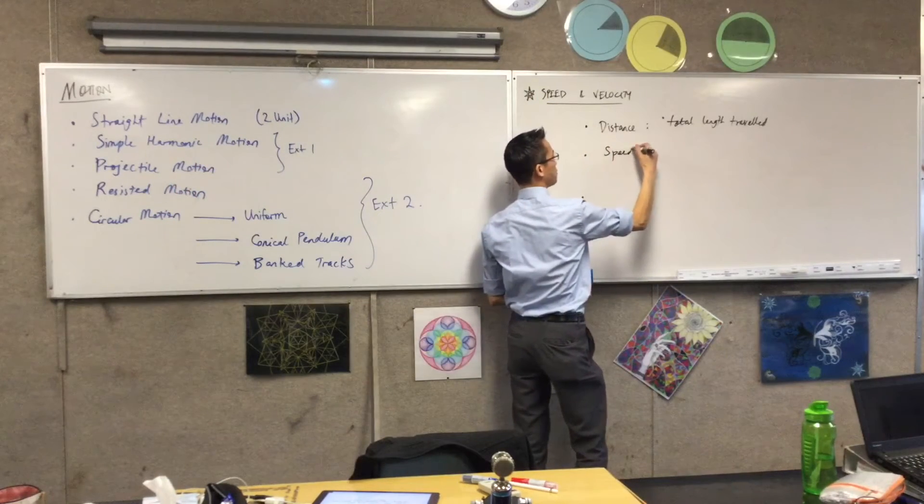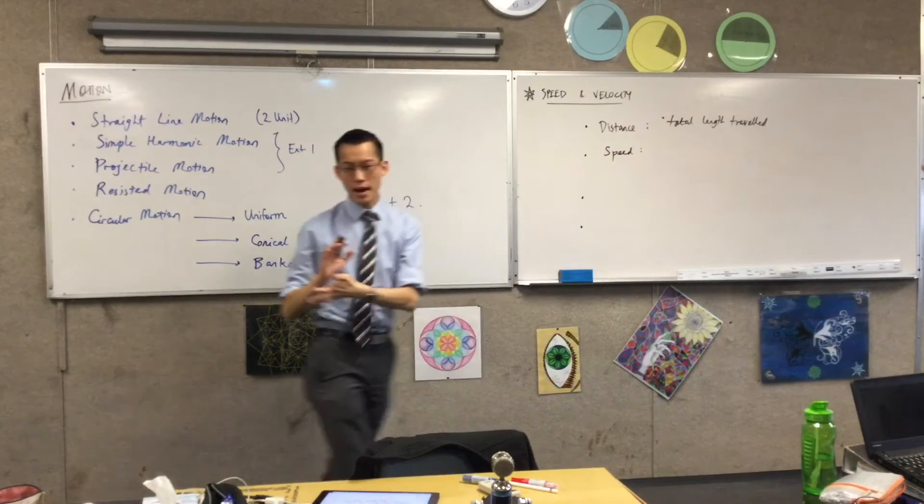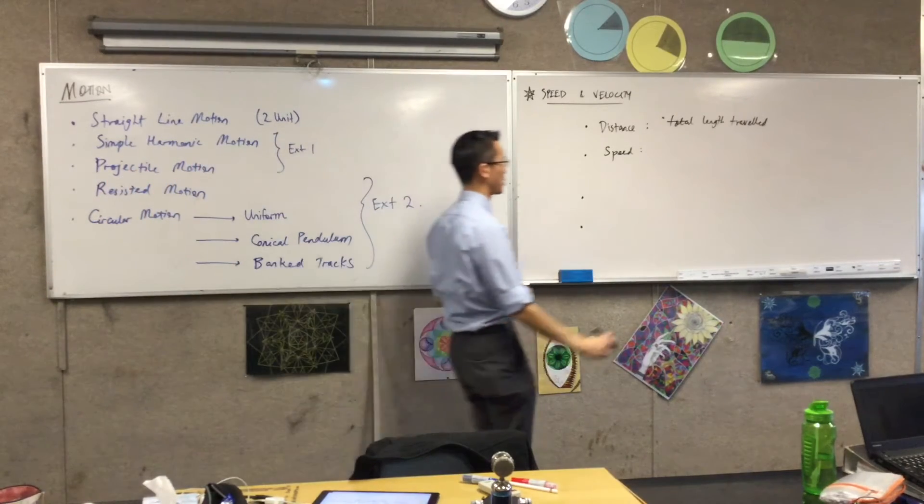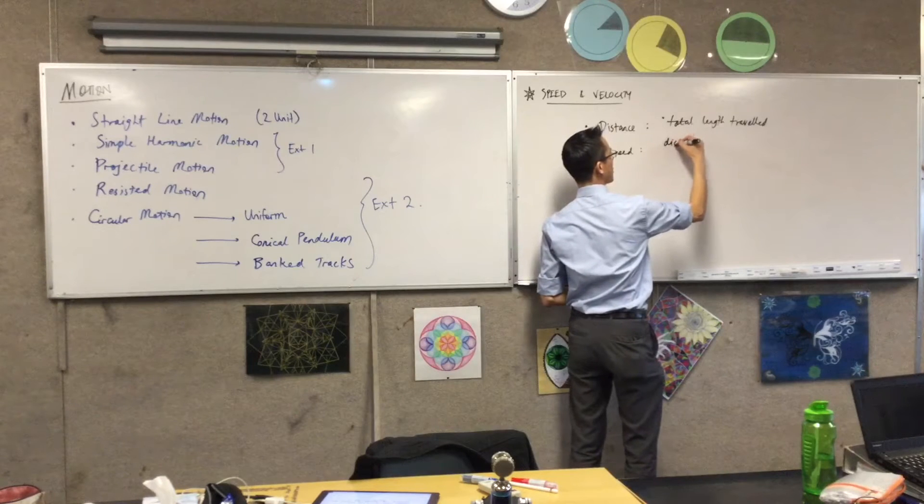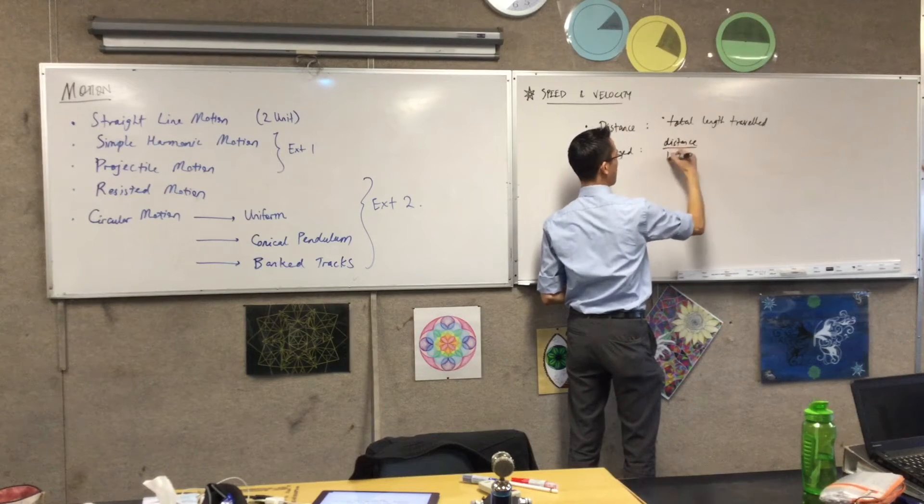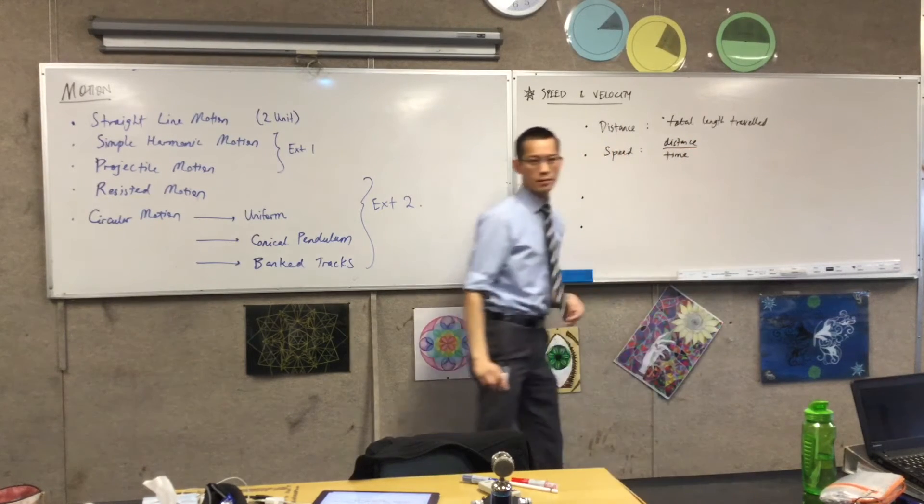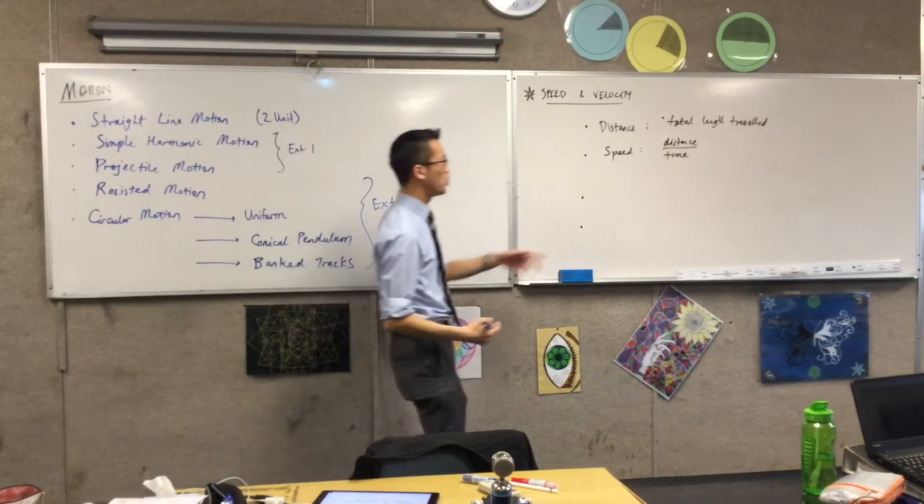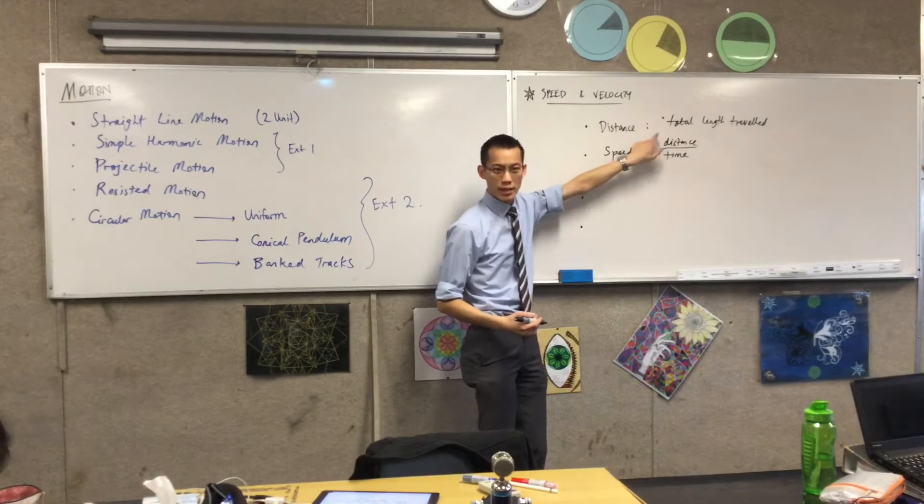So speed is simply, we actually have this triangle which you've learned all the way back in stage 4 science, which is distance over time. Speed is the name that we give to the comparison and change between distance and time.